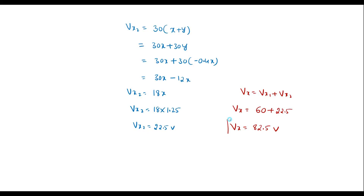So this is the voltage Vx — that is, the voltage across the 30 ohm resistor — calculated using superposition theorem. Thank you for watching.